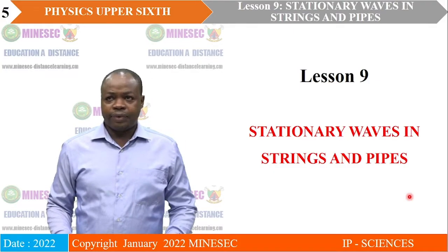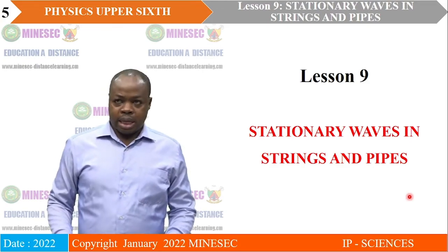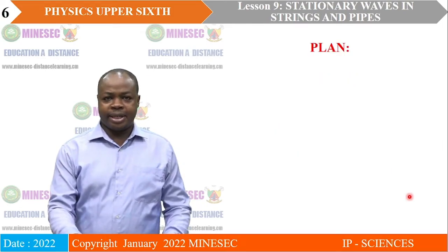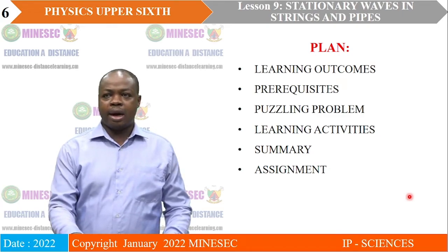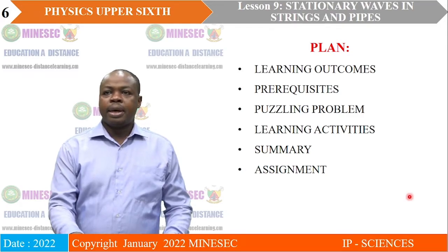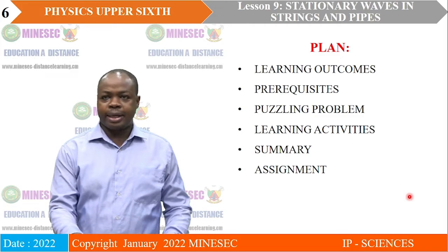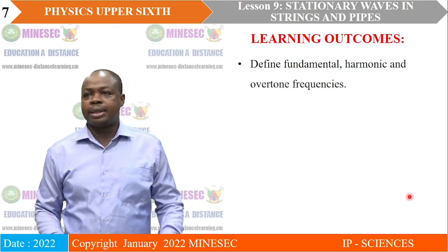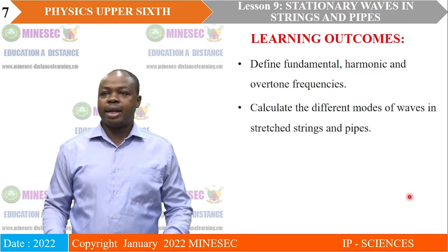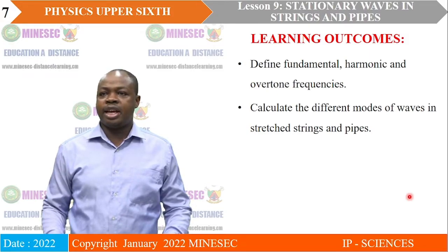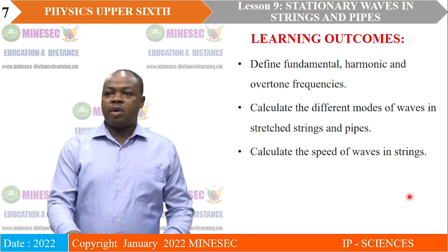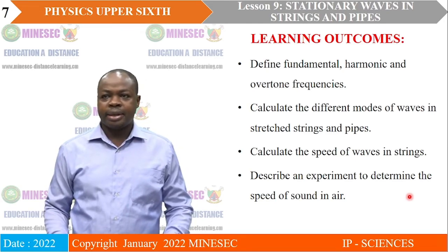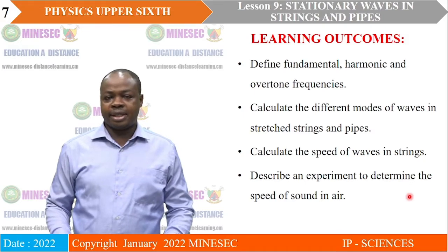Our lesson for today is Lesson 9: Stationary Waves in Strings and Pipes. The lesson will cover learning outcomes, prerequisites, puzzling problems, learning activities, summary, and assignment. At the end of this lesson, you are expected to define fundamental, harmonic, and overtone frequencies; calculate the different modes of waves in stretched strings and pipes; calculate the speed of waves in strings; and describe an experiment to determine the speed of sound in air using resonance in air columns.